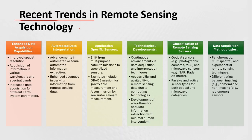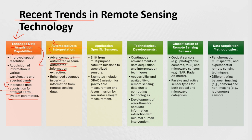What are the major trends in remote sensing technology? First is enhanced data acquisition capability — we now have improved spatial resolution datasets across various wavelengths and spectral bands. Next is automated data interpretation, aided by AI and machine learning for automated or semi-automated information extraction. We have also shifted from multipurpose satellite missions to specialized sensors, like the GRACE mission for gravity field measurement and the Jason mission for sea surface height measurement.